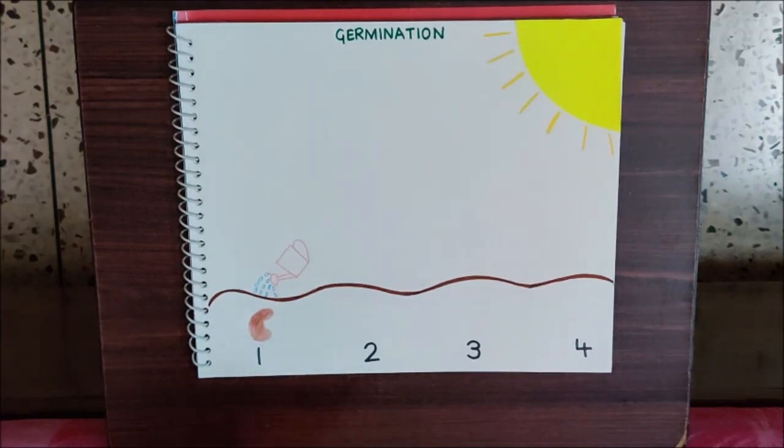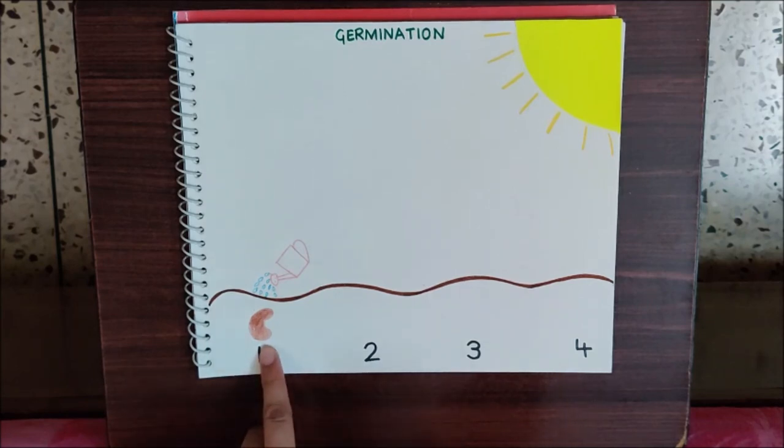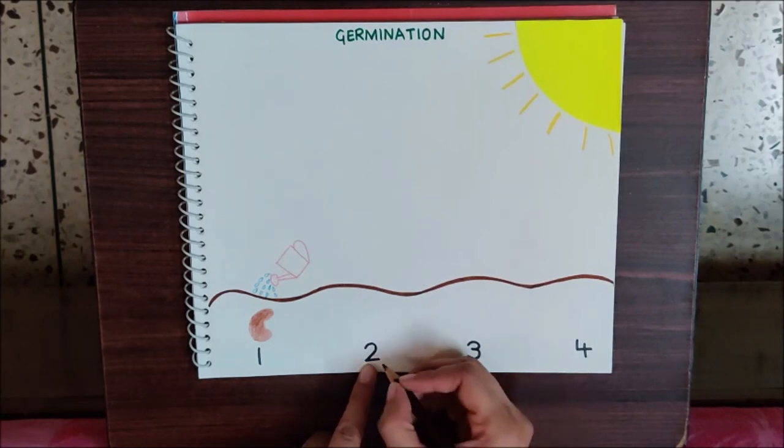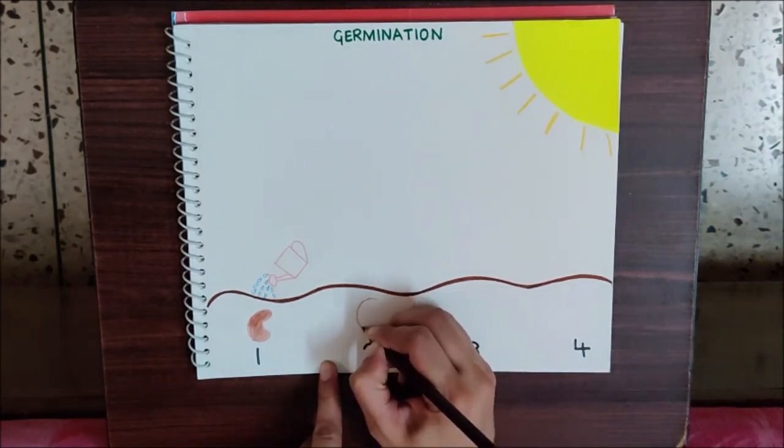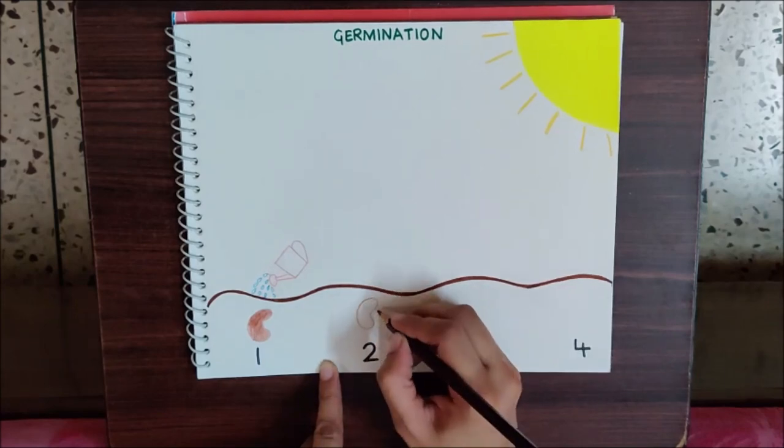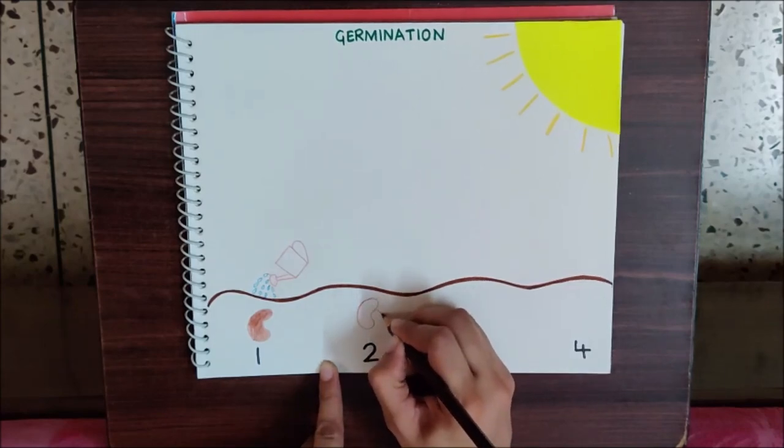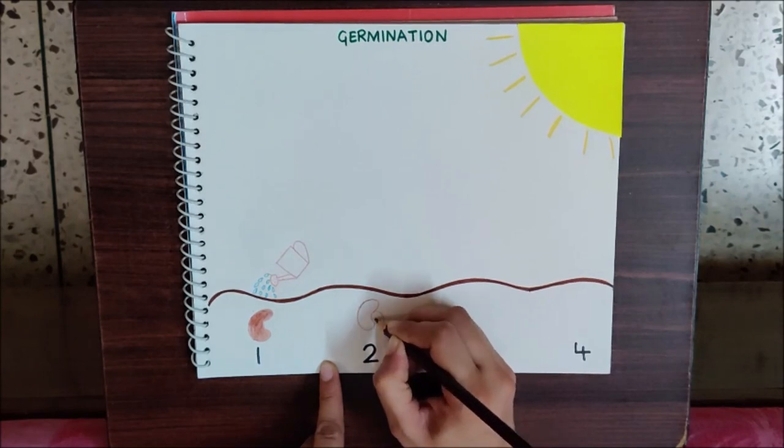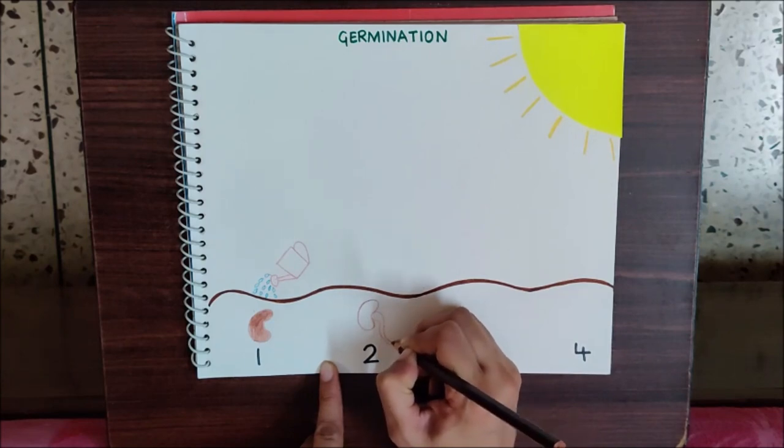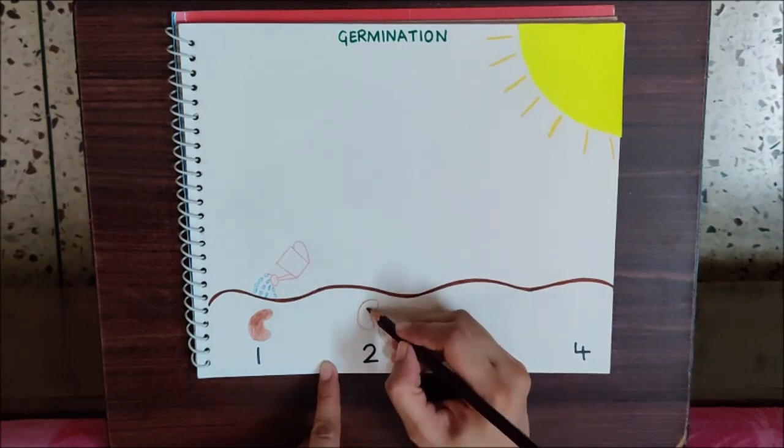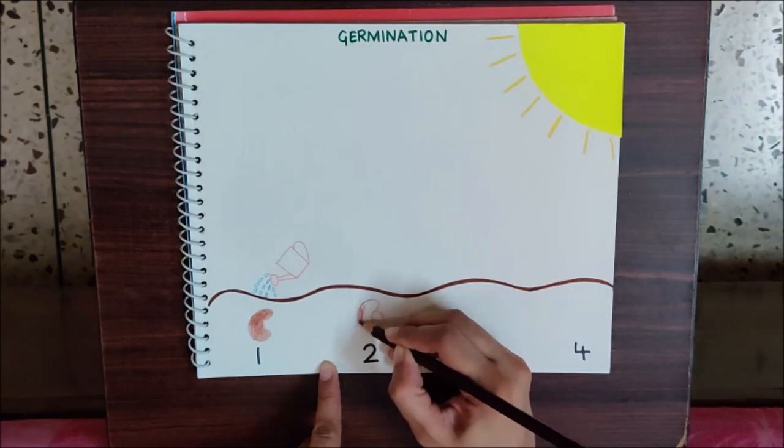Now, after some days, what will happen to the seed? A shoot will come out. So stage 2 is when from a seed, a shoot comes out. This is the shoot and this is the seed. I am coloring the seed.